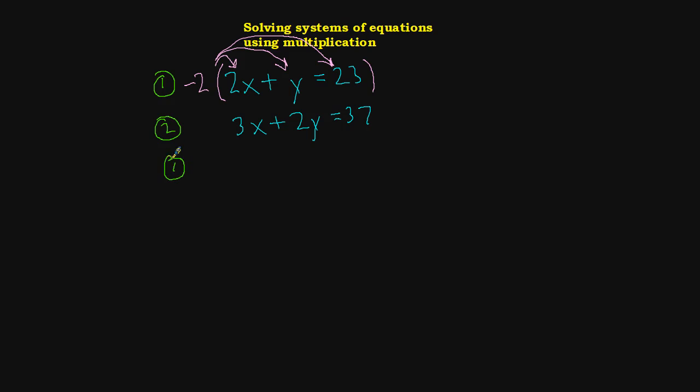I'm going to rewrite equation 1 with the negative 2 multiplied all throughout. So here we go. Let's try it. We're going to go negative 2 times 2x, that's negative 4x. And then negative 2 times y, that's negative 2y. That's what I was hoping to get. And then negative 2 times 23. Oh, don't forget, we just copied the equal sign down. Negative 2 times 23 is negative 46.